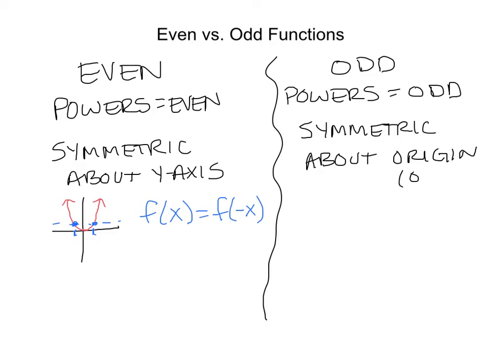The origin is the point (0, 0). If you think about a cubic graph, it kind of looks like a little snake. You can see that if you were to take it and rotate it about the origin, it would match up with the other part of it — that's what makes it odd. Odd functions have that rotational symmetry.